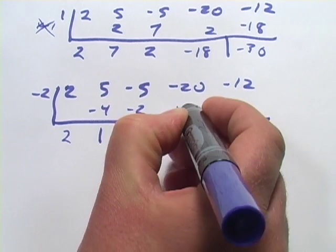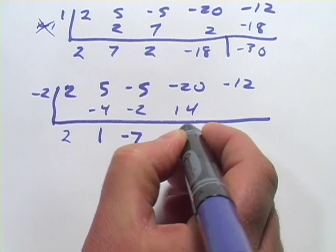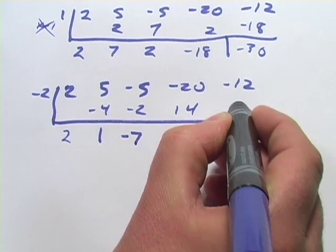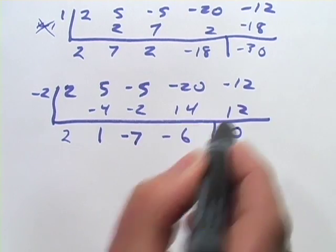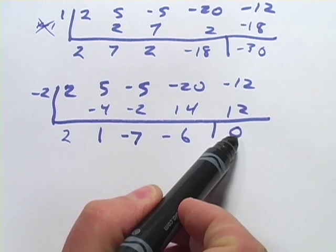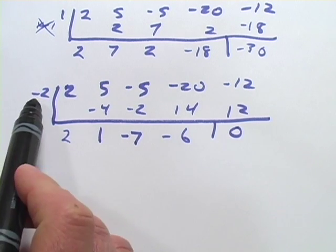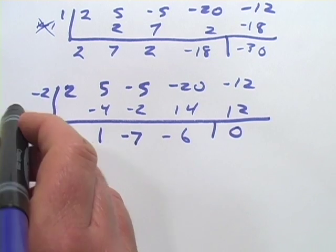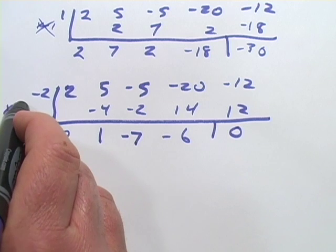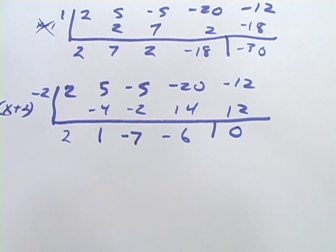Multiply. So we've got negative 12. Positive 12 adds up to 0. So our remainder is 0. That means this is a solution. So the factor is going to be x + 2. So we found one factor so far.